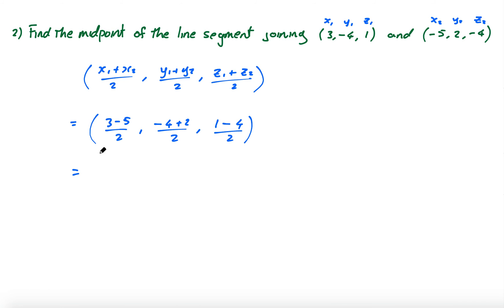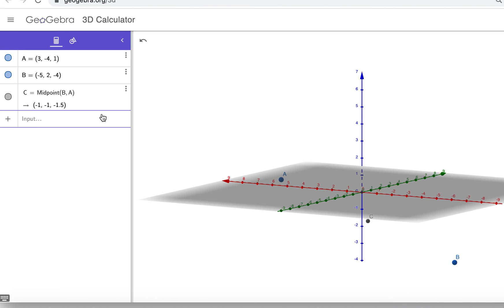I can already see this is 3 minus 5 is negative 2 over 2 is negative 1. Negative 4 plus 2 is negative 2 divided by 2 is negative 1. And 1 minus 4 is negative 3 divided by 2 is negative 1.5, which is exactly what GeoGebra got: negative 1, negative 1, negative 1.5.